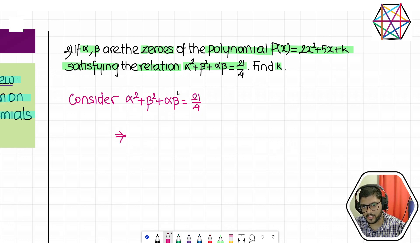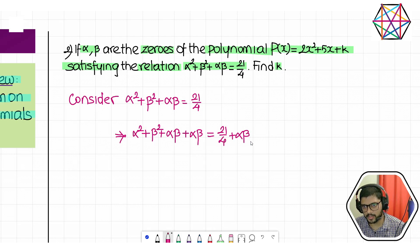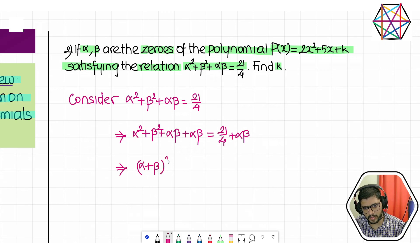The LHS almost looks like a perfect square — the only thing it's missing is another αβ. So we add αβ to both sides; when adding something to the LHS you must do the same to the RHS to keep the equation balanced. The entire LHS becomes (α + β)², since it's α² + β² + 2αβ, equal to 21/4 + αβ.